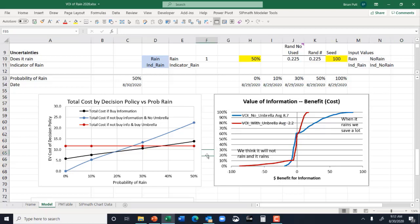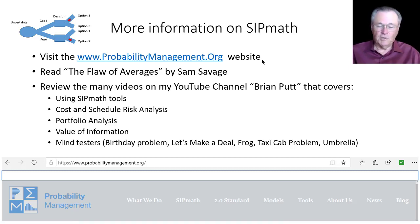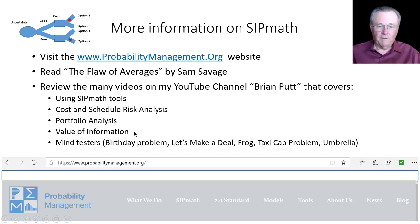If you'd like to get more information on SIPMath, please visit probabilitymanagement.org and you can download the SIPMath toolbar — there's a free version and an enterprise version. What I'm showing you in the model today only needs the free version, so you could duplicate this, and I'd be happy to send you the model as well if you'd like. You might read The Flaw of Averages by Sam Savage — there's actually a new version coming out soon. And I have many videos on my YouTube channel covering use of the tools, cost of risk analysis, portfolio, value of information, and some mind problems if you'd like to play little mind games using SIPMath to solve them. I hope you found this valuable.